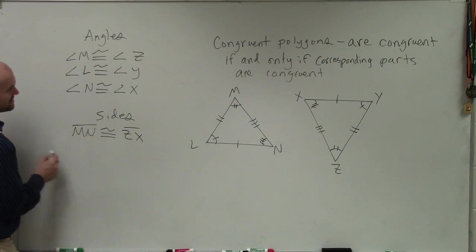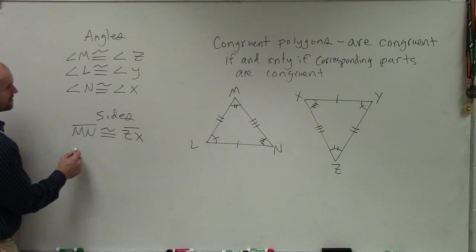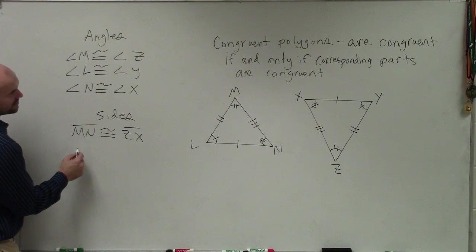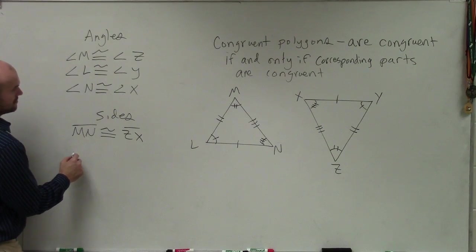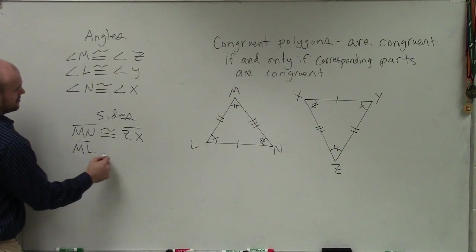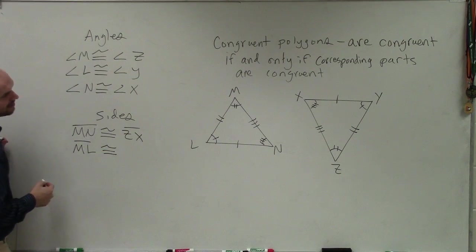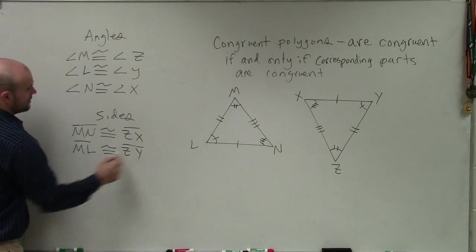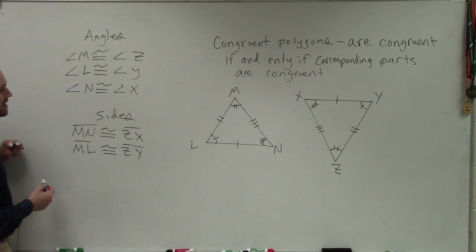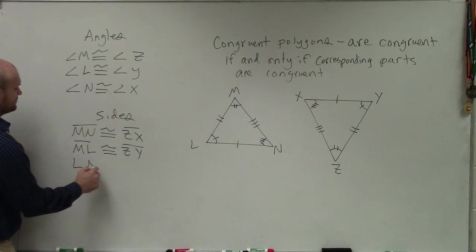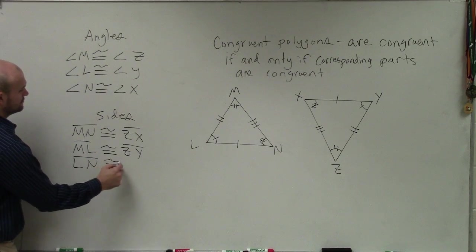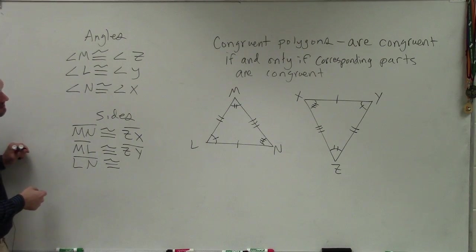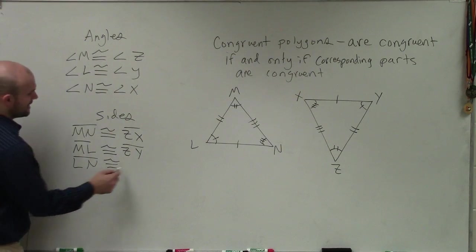So now let's look at the other lines. We could have MN, and then you could also do ML. ML is now going to be congruent to ZY. And our last one, ML, MN, would be LN, which is going to be congruent to YX.